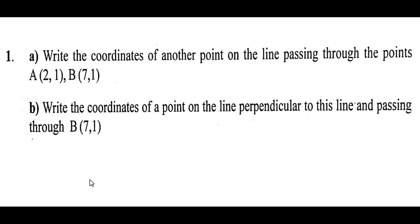The first question is: write the coordinates of another point on the line passing through the points A(2,1) and B(7,1). Part b: write the coordinates of a point on the line perpendicular to this line and passing through B(7,1).